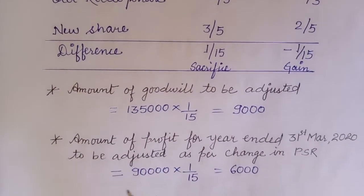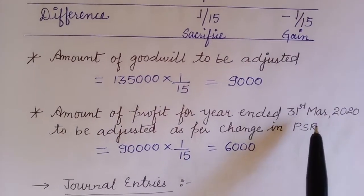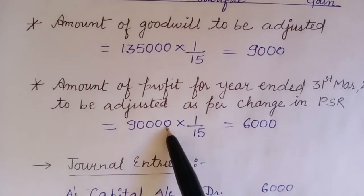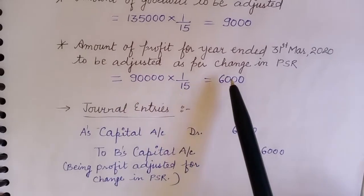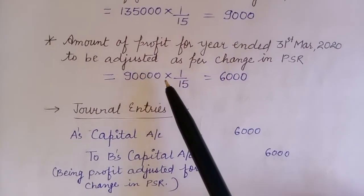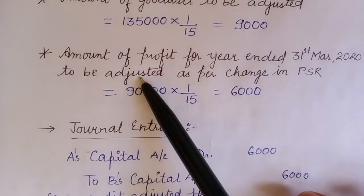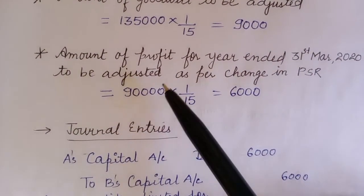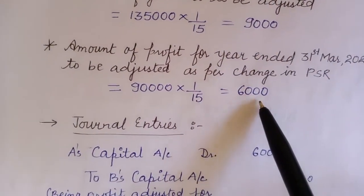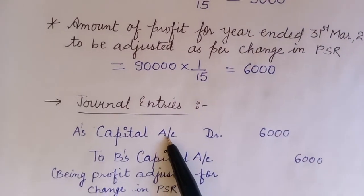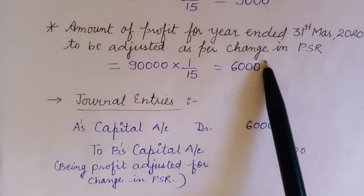The amount of goodwill to be adjusted as per the change in profit sharing ratio — and for the year ended 31st March 2020, there is also profit that needs to be adjusted. That is ₹90,000 × 1/15, because the profit was already distributed and we need to recalculate and readjust for gain and sacrifice. That gives ₹6,000.